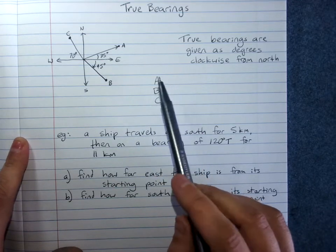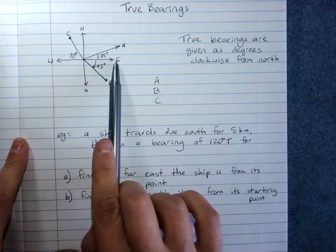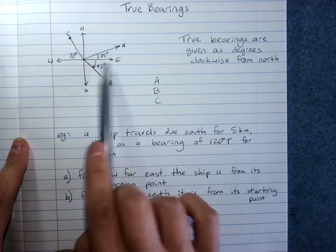Bearings can be given in a variety of different ways. For example, you could say that you traveled due east, which is 90 degrees clockwise of north.